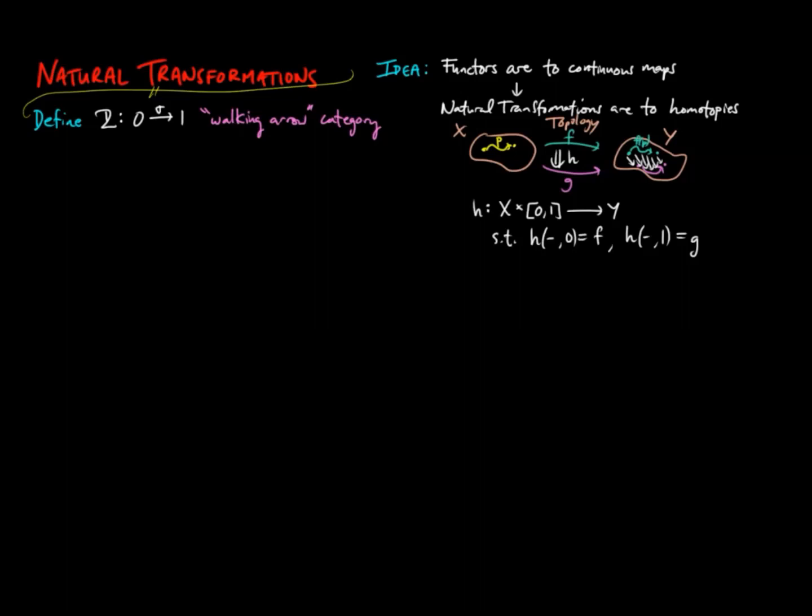Given a category A, we define the product category A cross 2 to have objects as pairs (little a, i), where A is an A object and I is a 2 object, and morphisms will be pairs F cross lambda, where F is an amorphism and lambda is a 2-morphism, being either the identity on 0, the identity on 1, or sigma. We can now lift the definition of homotopy to that of a natural transformation.